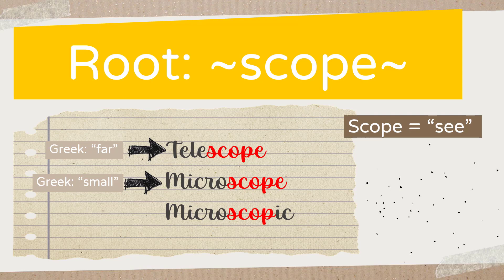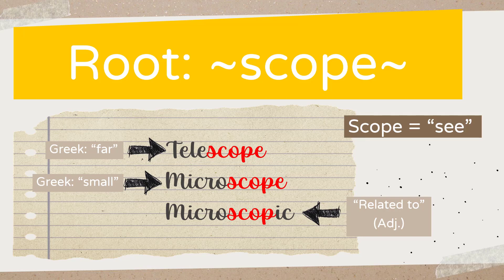Now, what if I change the ending from '-scope' — instead of ending with an 'e,' I change it to '-ic'? Now I do have a suffix in the word: 'microscopic.' Whenever you add '-ic' to a word, the majority of the time it changes it into an adjective meaning 'related to.' So you can say a microscopic organism, meaning the organism is so small that you actually need a microscope to see it.